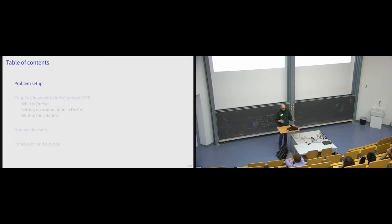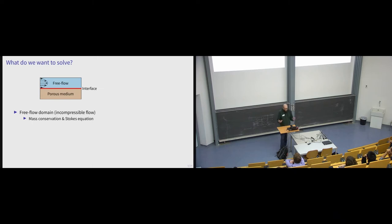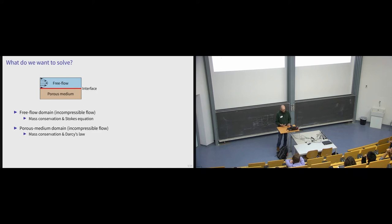In this DuMux setting, I want to talk about free flow and porous media flow coupling, assuming a sharp interface. For the free flow domain, keeping it simple: incompressible flow at moderate speeds, so we use Stokes equations with mass conservation. For the porous medium domain, also incompressible — we solve mass conservation together with Darcy's law.